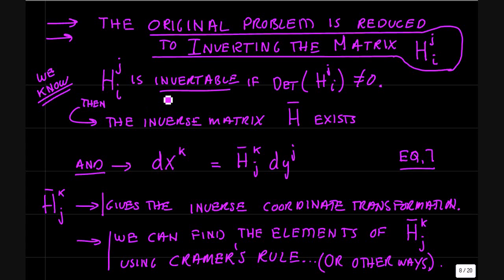Okay, so let's take a look at that. So we note the original problem is reduced to inverting the matrix h_j^i. Such a matrix is invertible if the determinant of the matrix is non-zero. If that's the case, then the inverse matrix h bar exists.